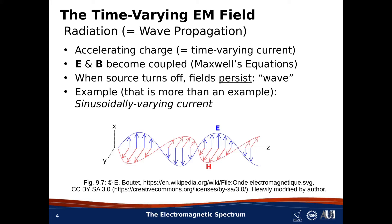Furthermore, energy is transported away from the source, and the energy that has already been shed by the source continues to move away from the source. Note that this is completely different from what happens in the static case, where the fields simply vanish when the source is turned off. Now, there are lots of ways that you can make a time-varying current — in fact, that is essentially the definition of an antenna.